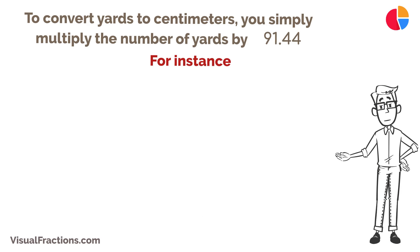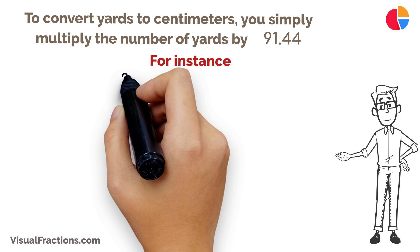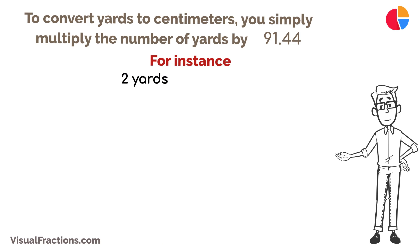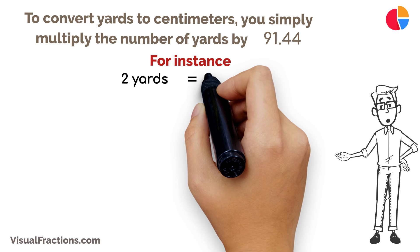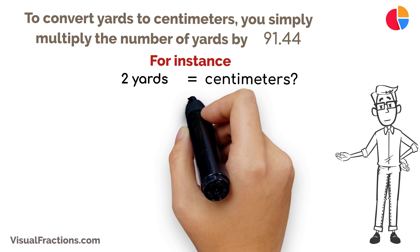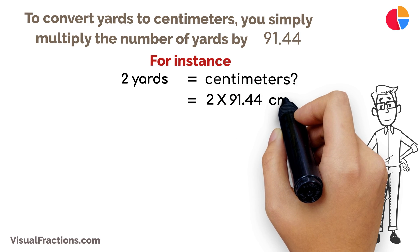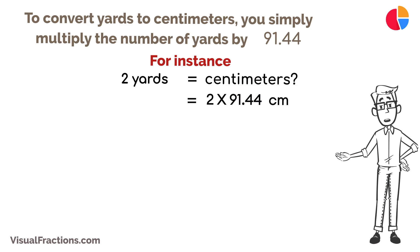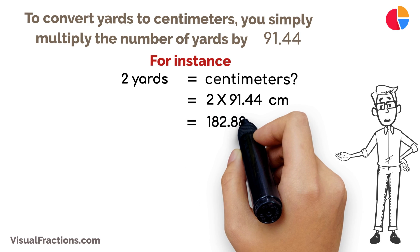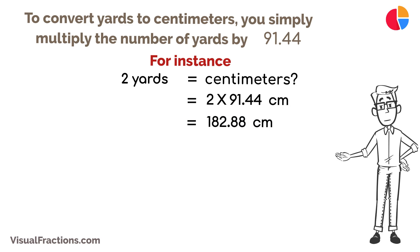For instance, if you have a length of two yards and you need to know its equivalent in centimeters, multiply two yards by 91.44. This calculation gives you a total of 182.88 centimeters.